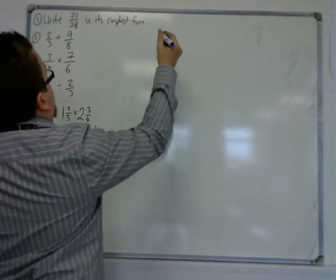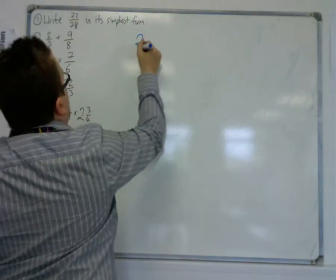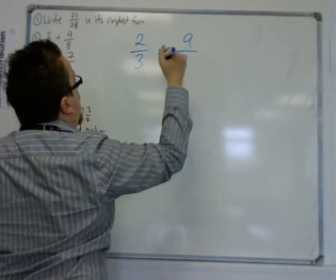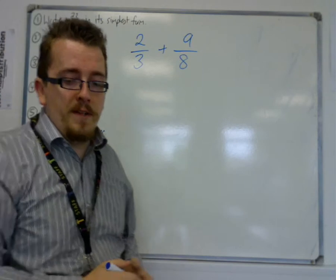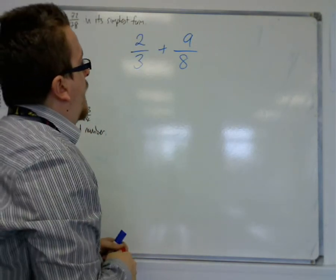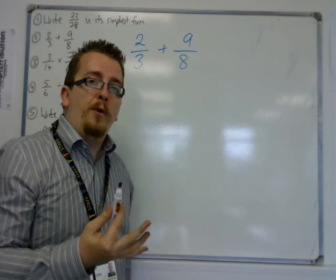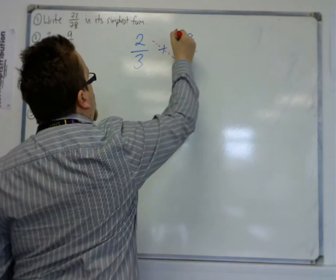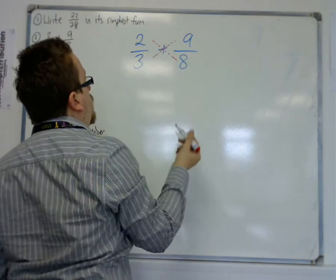Then we get on to adding fractions. Adding and subtracting fractions is, in my opinion, more difficult than multiplying or dividing. So the process of adding fractions is through cross multiplication. It's called cross multiplication because, effectively, there is a cross involved.